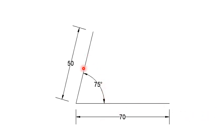measure 75 degrees, and draw another construction line, 50 millimeters. So everything should remain in construction lines.